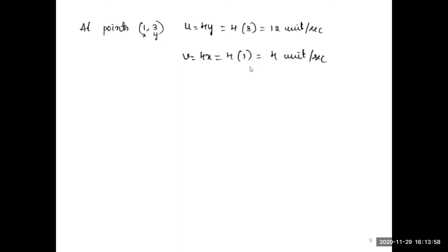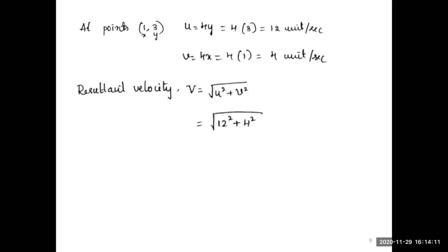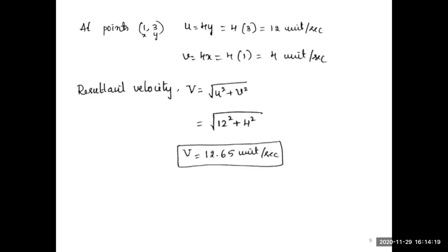The resultant velocity formula is V = √(u² + v²). Substituting u = 12 and v = 4: V = √(12² + 4²) = √(144 + 16). So V = 12.65 units per second.